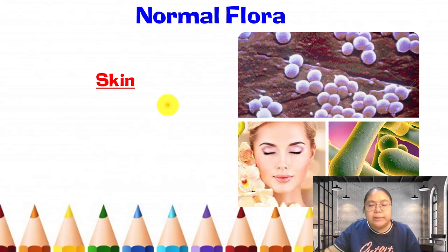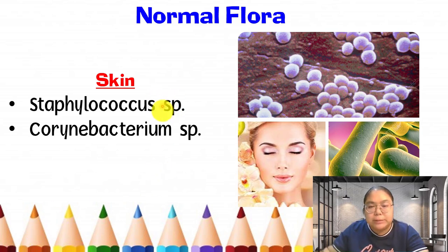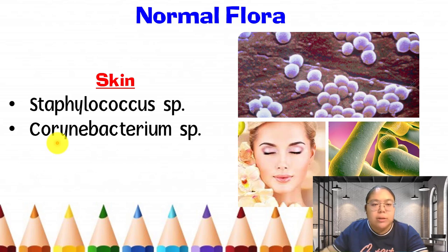The next location is the skin, which also has normal flora. We have Staphylococcus species — 'sp' stands for species. Another one is Corynebacterium species. These microorganisms appear on the skin and may not disappear because they are already there as part of the normal flora.